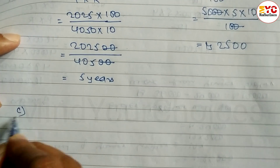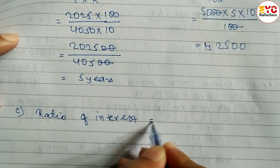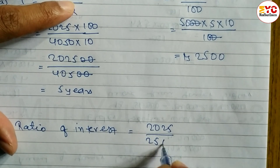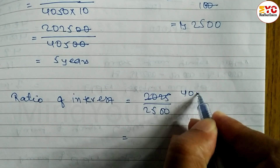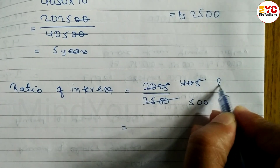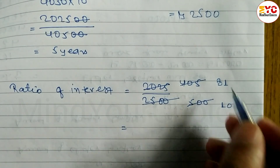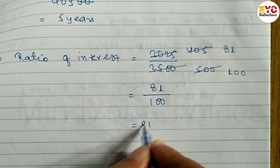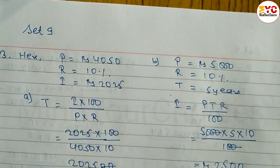Now question c: find the ratio of interest. The ratio of interest is 2025 divided by 2500. Let's calculate — we can reduce by 5: 2025 divided by 5 is 405, and 2500 divided by 5 is 500. Further reducing by 5 gives 81 divided by 100. So the ratio of interest is 81:100.